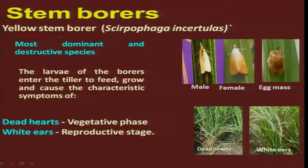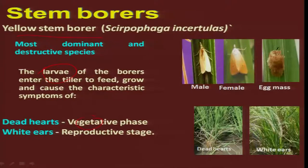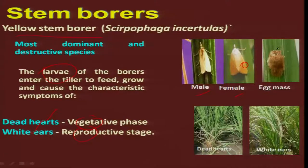The number one pest, yellow stem borer, scientifically referred to as Scirpophaga incertulas, is the most dominant and destructive species in the paddy ecosystem. The larva is the damaging stage, causing a symptom known as dead heart in the vegetative stage, and white ears in the reproductive stage. Male and female can be differentiated easily — the female has two black spots and lays eggs in the leaf tip in groups covered with hairs, which is an important behavioral character that can be used in the IPM strategy.